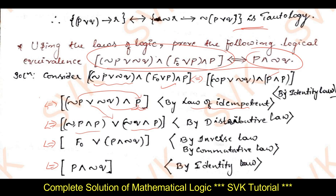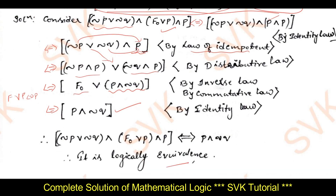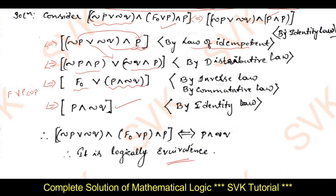By inverse law, ¬p∧p is always false. Then I apply the commutative law to get p∧¬q. Finally, by identity law, false ∨ (p∧¬q) is logically equivalent to p∧¬q itself. That is the right-hand side of the given compound proposition. So by using the laws of logic, I have proved that these two expressions are logically equivalent.